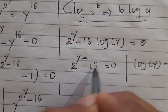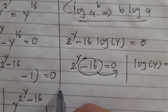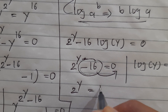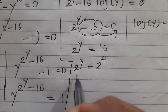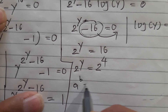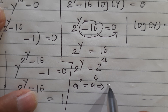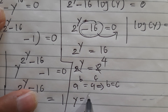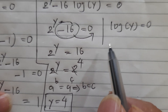Taking minus 16 to the right hand side, we get 2 to the power of y equals 16, and we know 16 is 2 to the power of 4. When we have the same base with different powers on both sides, the powers are equal. So y equals 4. This is another solution.